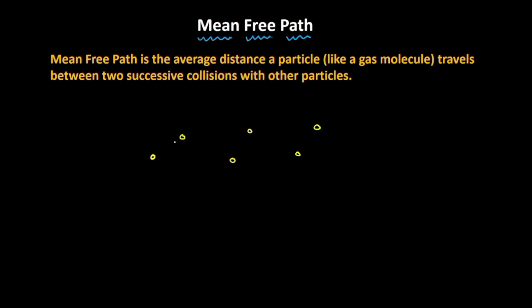What actually happens is when a molecule moves, it interacts with another molecule and this keeps on happening. So a molecule doesn't just go in a straight line — it keeps on bombarding with the molecules next to each other. The distance that this particular gas molecule travels between two successive collisions is what is called mean free path, also denoted by lambda.